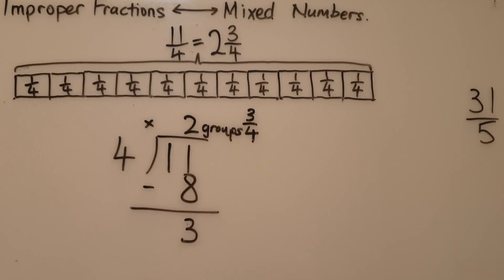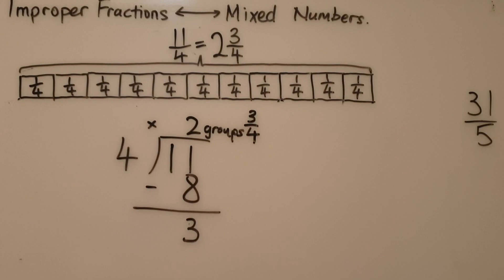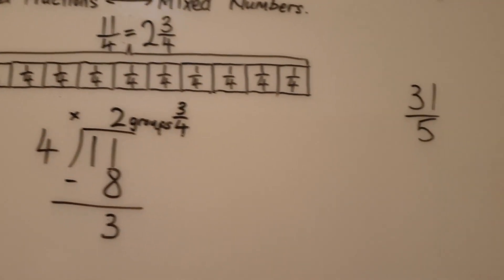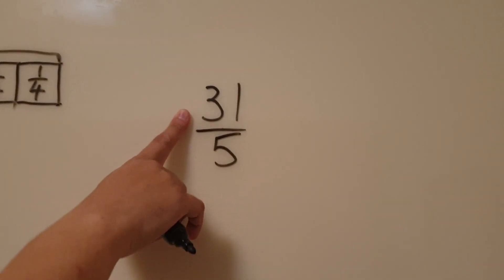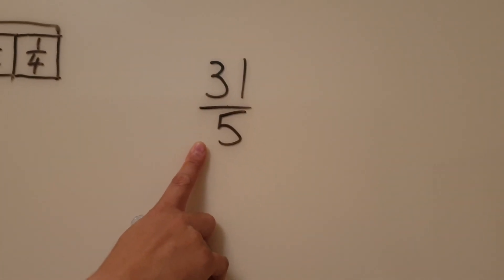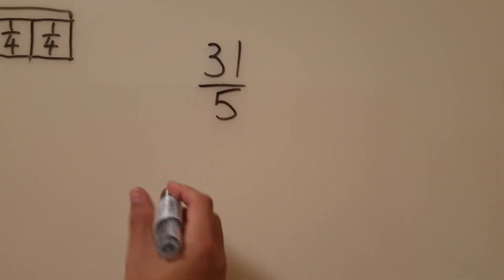Now in the next example I'm going to show you, I will not be writing the word groups. Let's take a look at the next one now. 31 fifths. So how many 5s, or how many groups of 5 can we find in 31? Let's find out.